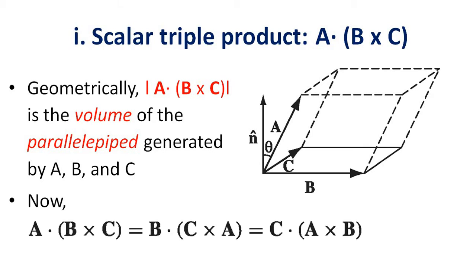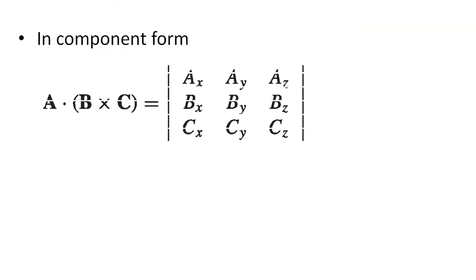Now, a dot b cross c equals b dot c cross a equals c dot a cross b. We can vary it cyclically. In component form, a dot b cross c can be written as a determinant with components x_a, y_a, z_a, x_b, y_b, z_b, x_c, y_c, z_c.